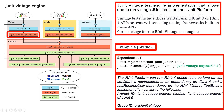The JUnit platform can run JUnit 4 based tests as long as you configure a test implementation dependency on JUnit 4 and a test runtime-only dependency on the JUnit Vintage test engine. Here you can see the artifact JUnit Vintage engine — the system module JUnit Vintage engine of JUnit 5 — using the group ID org.junit.vintage.